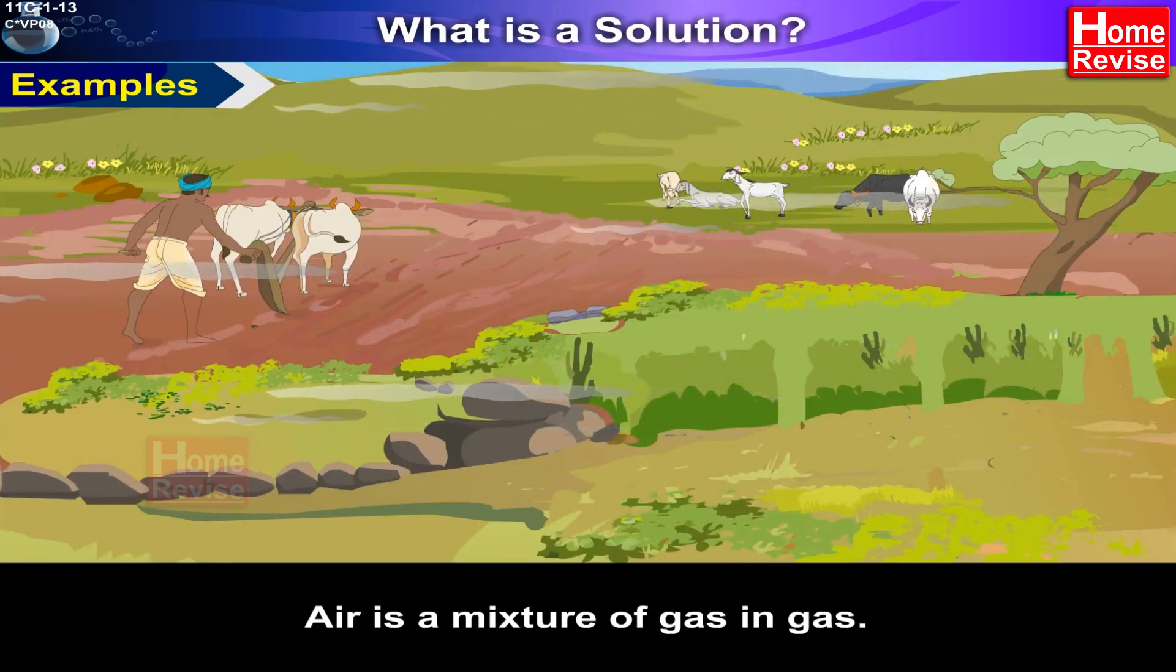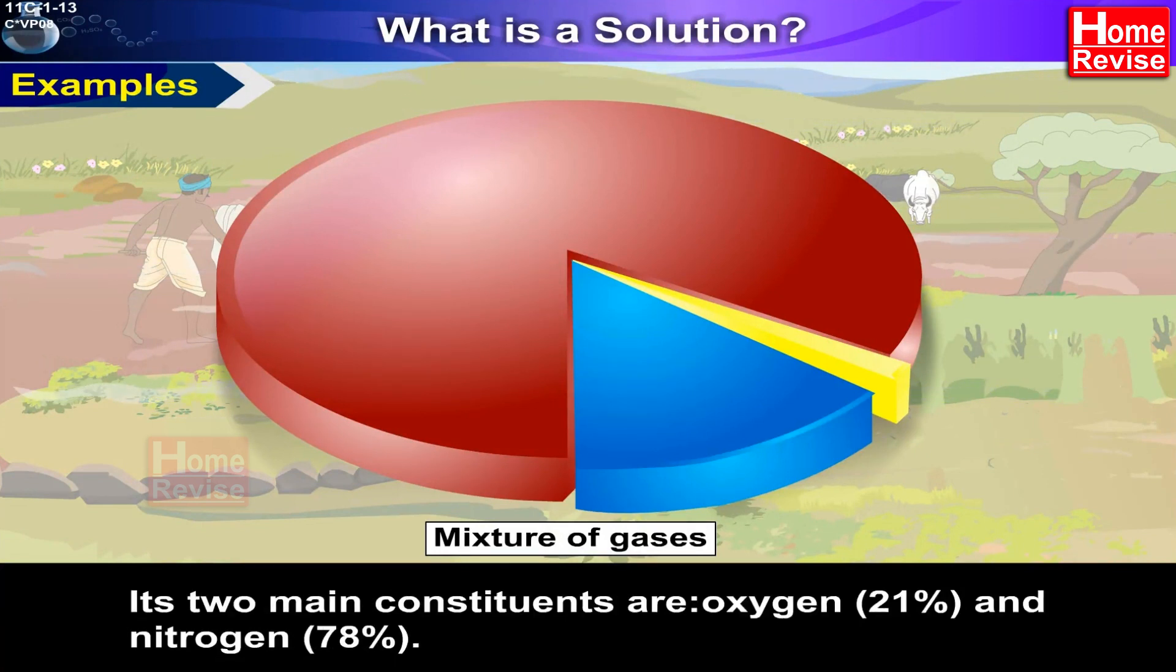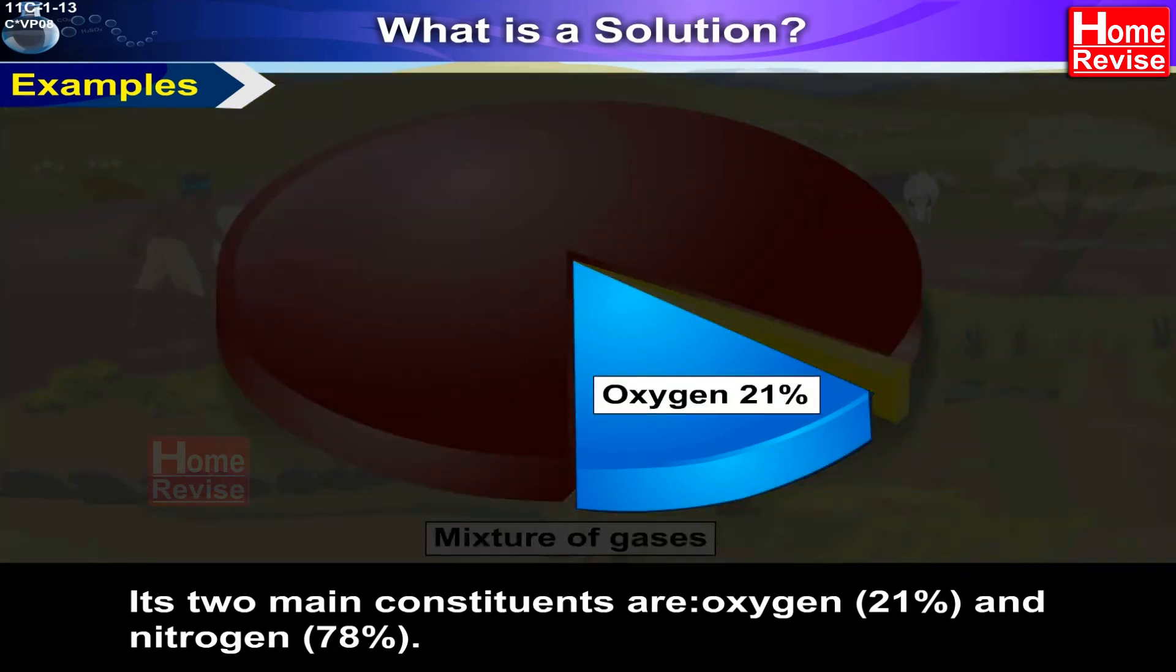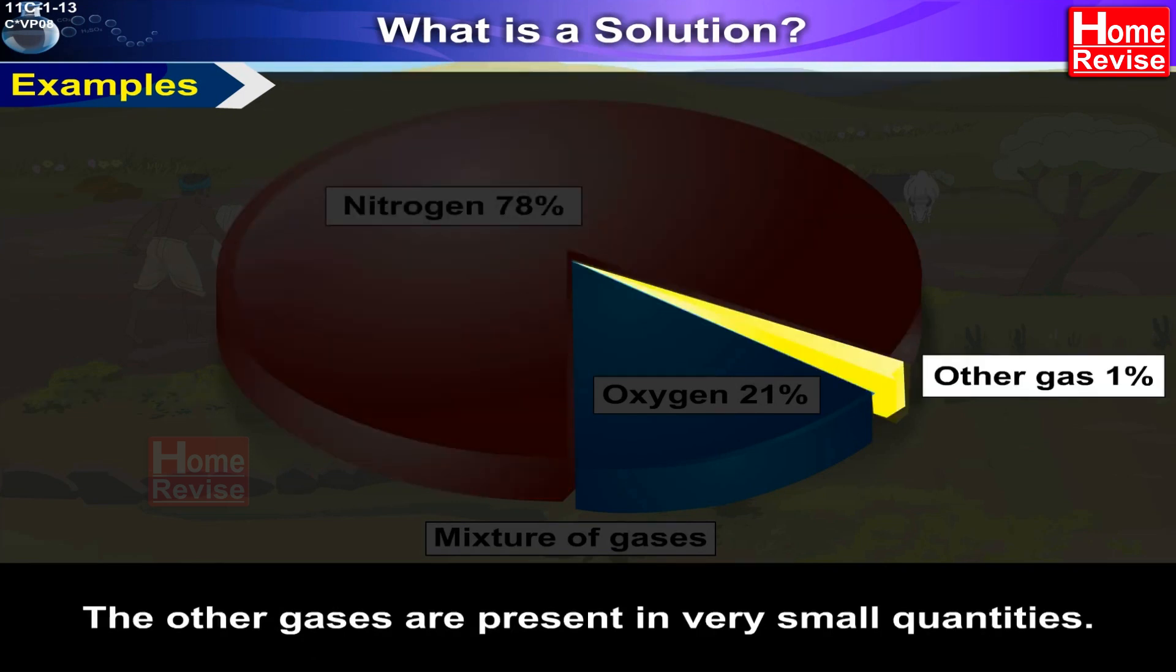Air is a mixture of gas in gas. Air is a homogeneous mixture of a number of gases. Its two main constituents are oxygen, which is about 21%, and nitrogen, around 78%. The other gases are present in very small quantities.